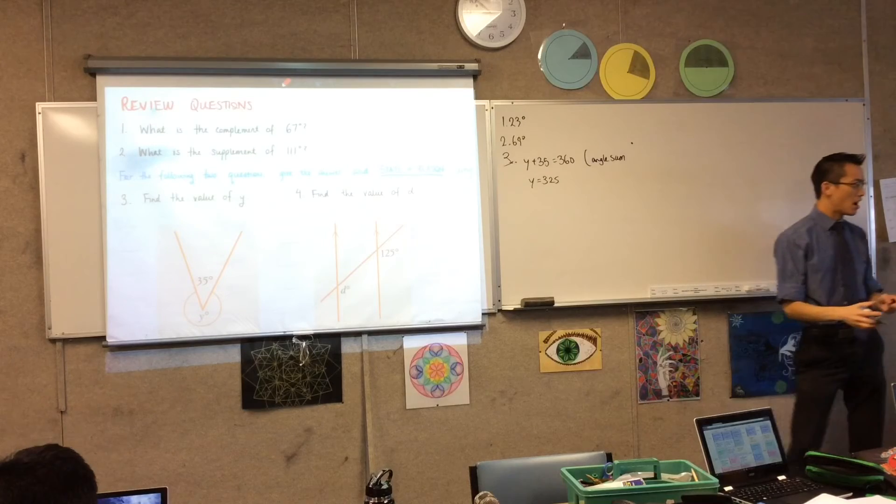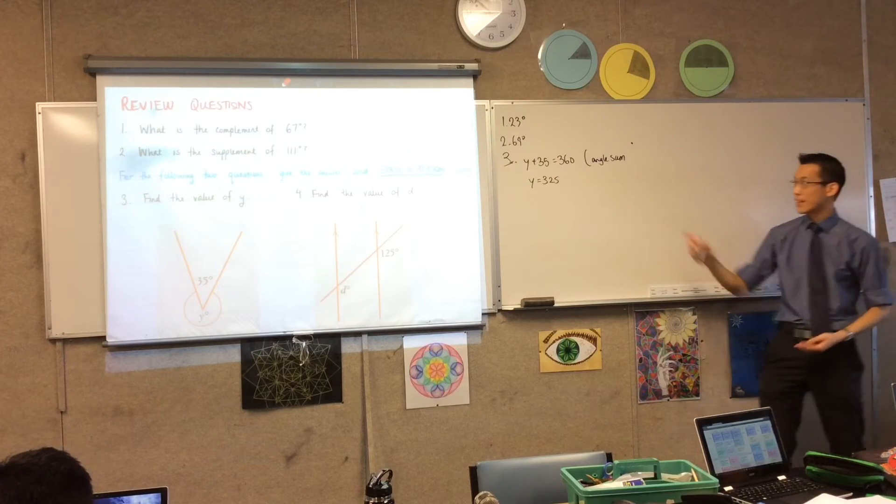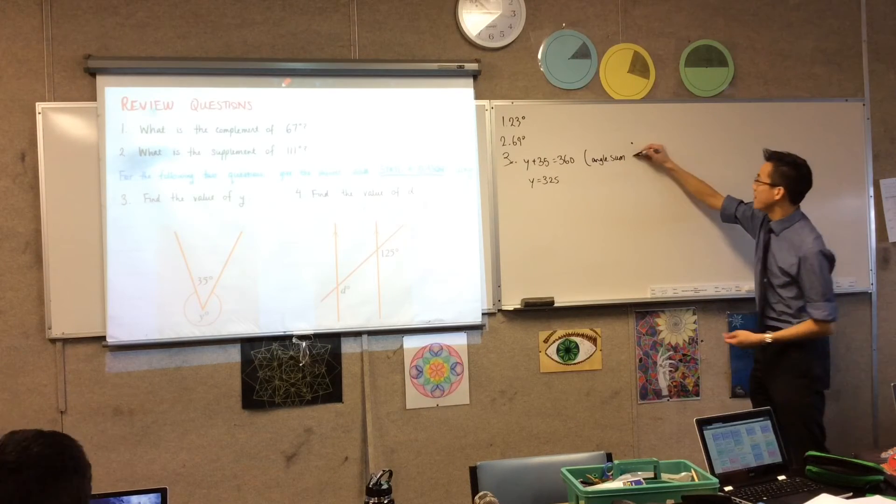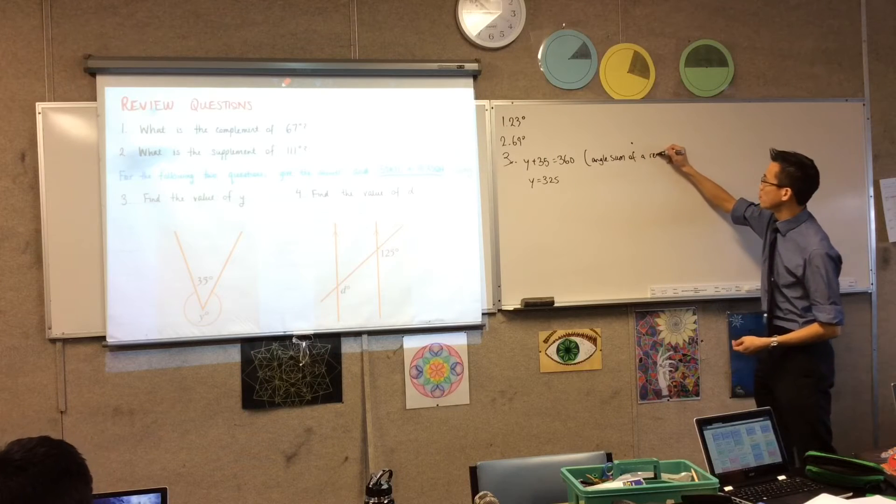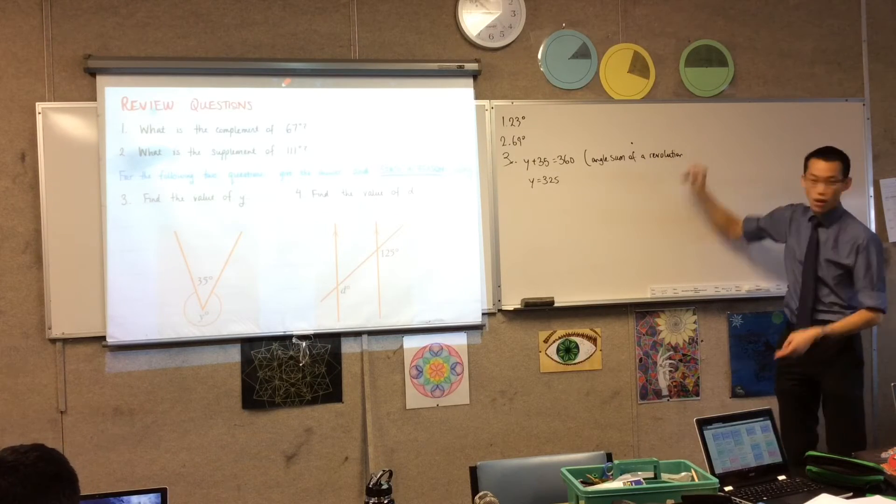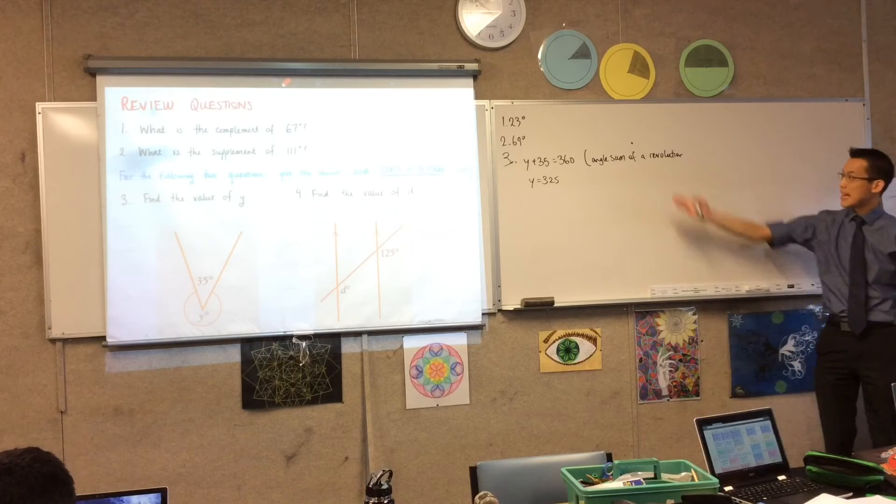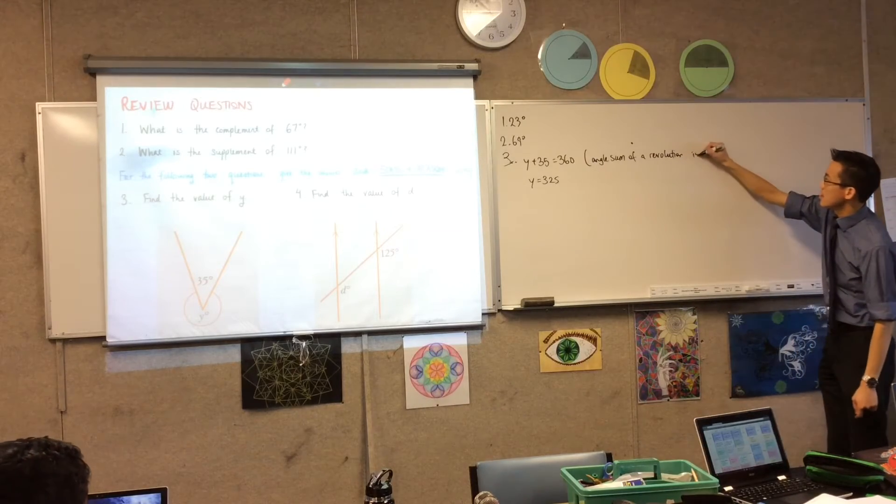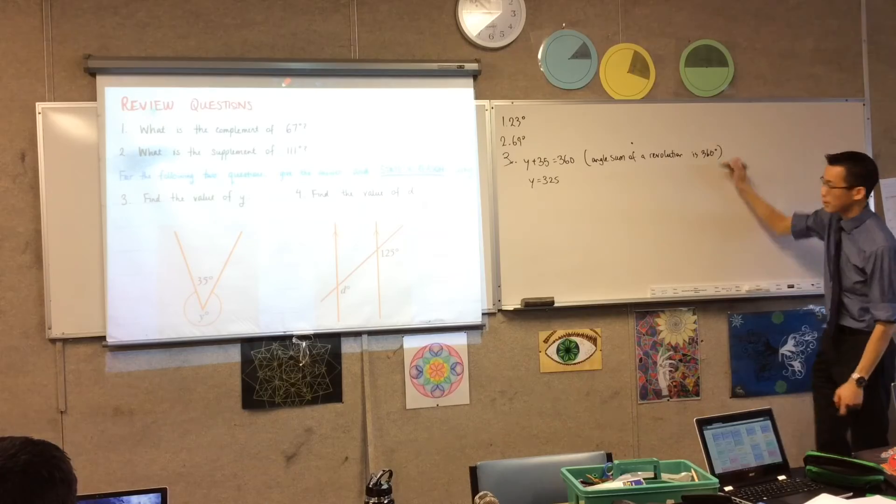I'm going to say the angle sum, and they're angles, and I'm adding them together, so that's why I use the word sum. The angle sum of a revolution, that was the word that you guys said to me before, which means go all the way around. The angle sum of a revolution is 360 degrees, okay?